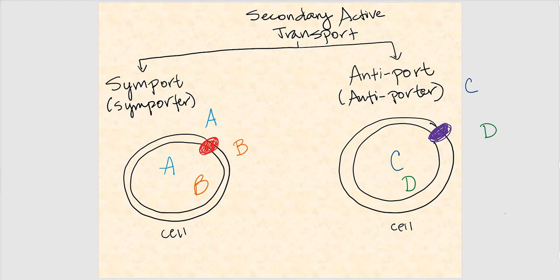The next thing we're going to talk about is secondary active transport. Some of you haven't discussed this in 189, so I thought I'd go ahead and discuss this because it's relevant not only for the digestive system, but also for the urinary system.